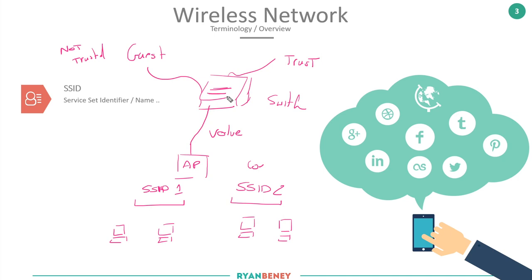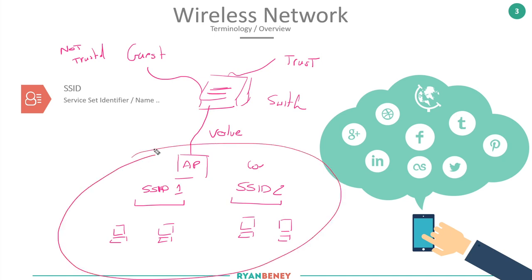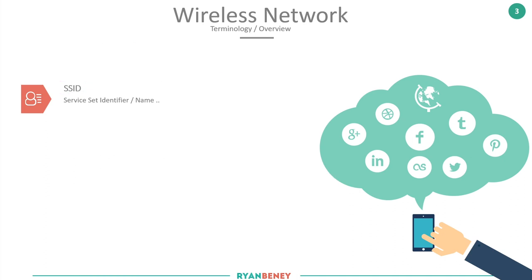When data is sent upstream toward the switch, the AP encodes it with a value identifying whether it's guest or corporate traffic. This matters because wireless is the access layer we need to secure — it's important that traffic from different SSIDs is handled appropriately, so we can distinguish trusted corporate traffic from untrusted guest traffic further upstream in the network.